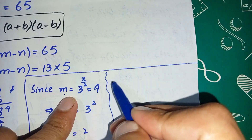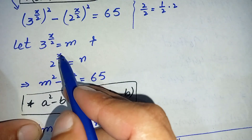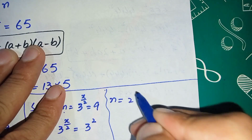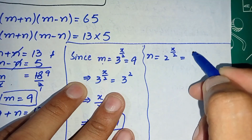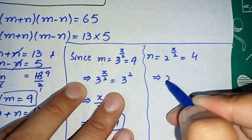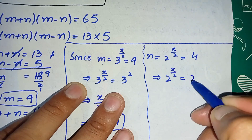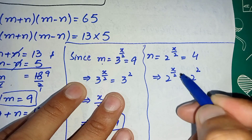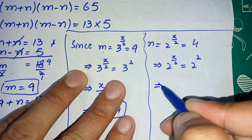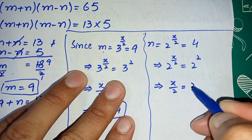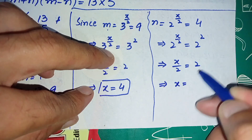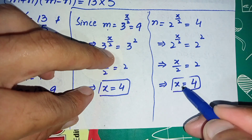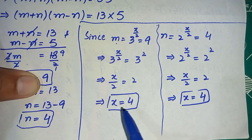Now substituting n back: since n equals 2 raised to power x/2, we write 2 raised to power x/2 equals 4, which is 2 raised to power 2. Since the bases are the same, we compare powers: x/2 equals 2. Multiplying both sides by 2 gives x equals 4. For both m and n, the value of x is the same — x equals 4.